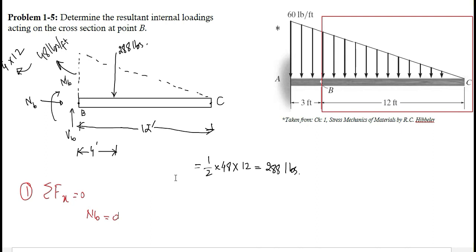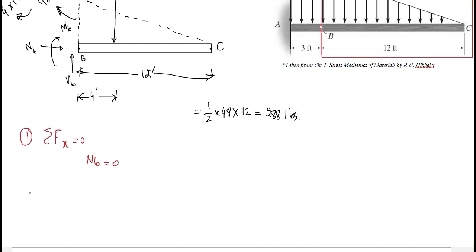Now applying the second condition of equilibrium: summation of all forces acting in y direction equal to 0. There are two forces acting in y direction, one is VB, another is 288 pounds. VB is acting upward and 288 pounds is acting downward. If I consider upward as positive then VB would be positive and 288 pounds would be negative. So from here we will have the value of VB as 288 pounds.